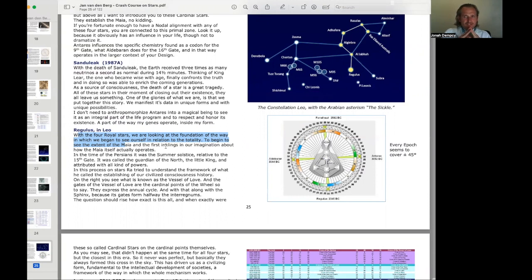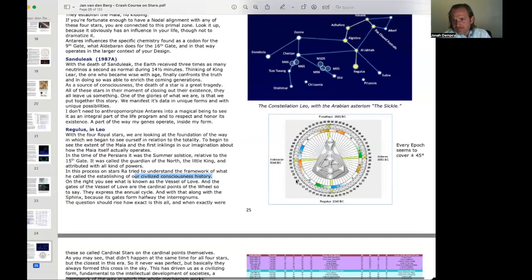In the time of the Persians, it was the summer solstice relative to the 15th gate. Regulus then was called the guardian of the north, the little king, and attributed with all kinds of powers. Ra tried to understand the framework of what he called the establishing of our civilized consciousness history. On the right, you see what is known as the vessel of love. The gates of the vessel of love are the cardinal points of the wheel. They express the annual cycle.